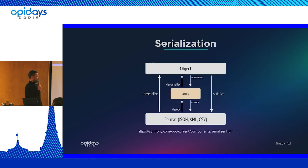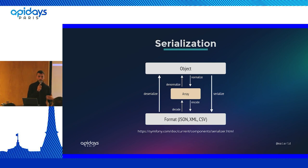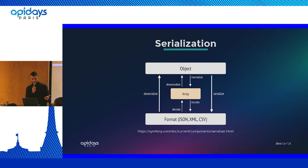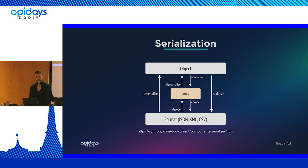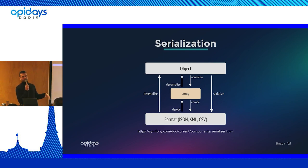How does it work in Symfony? Here is a schema from the Symfony documentation that explains how serialization works. The serialization is decomposed into two main parts: normalization and encoding. The normalization part is the fact of turning complex data structures into a simple, flexible, and standardized data structure. In concrete PHP terms, it's basically turning an object into an array - a simple hash map - which is really simple and flexible.